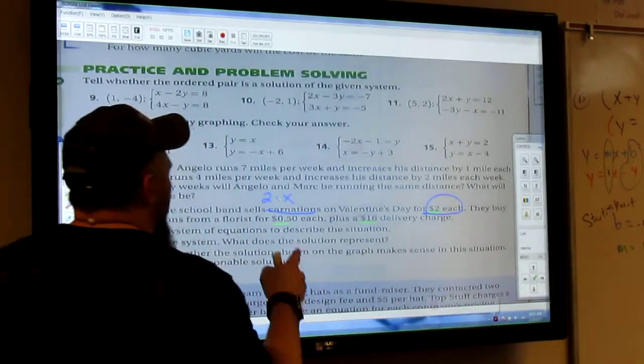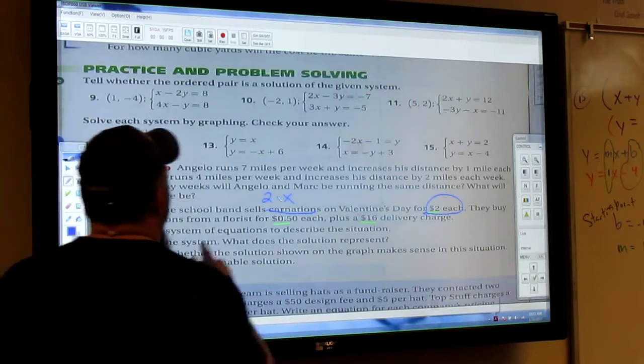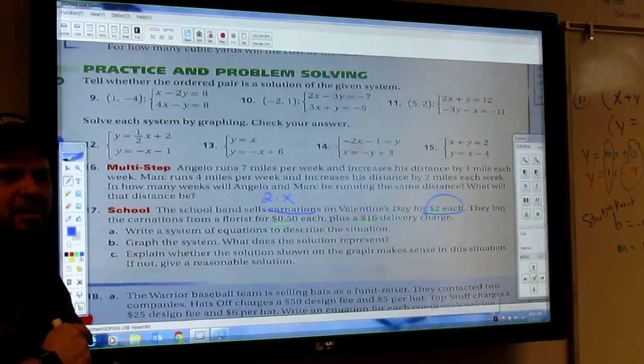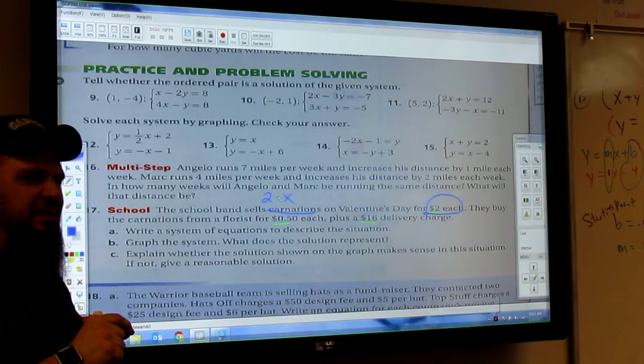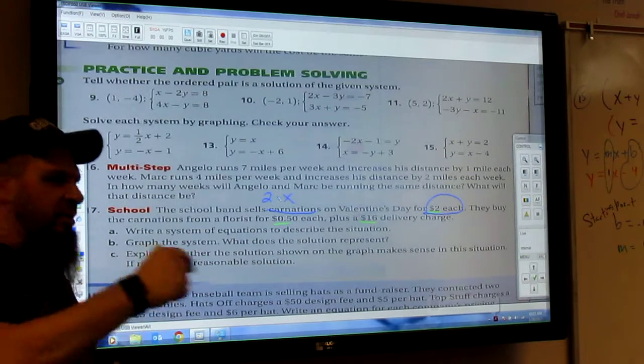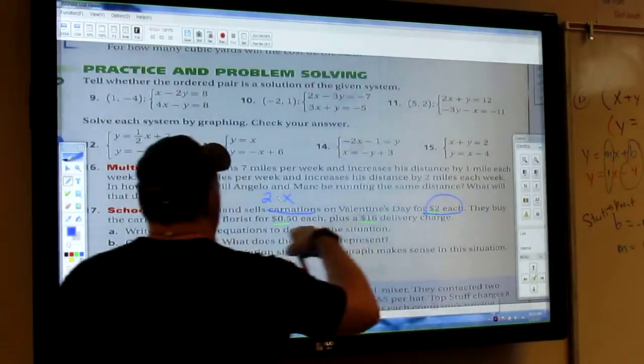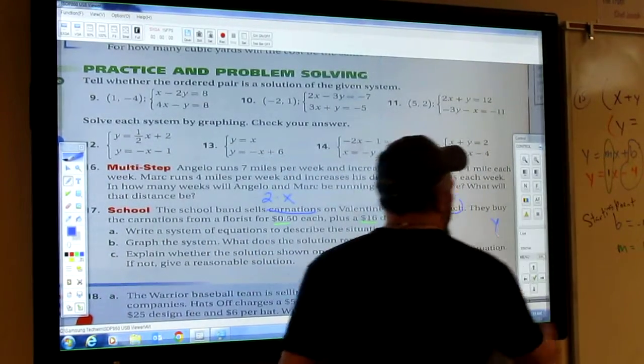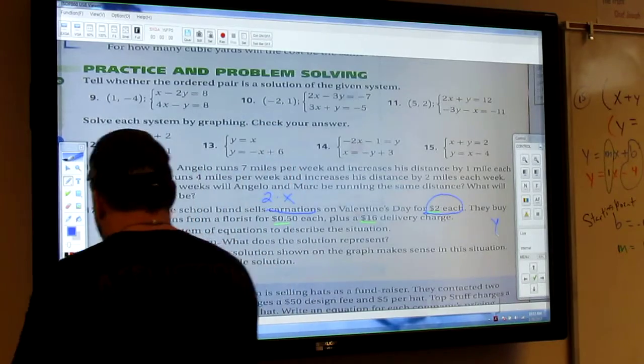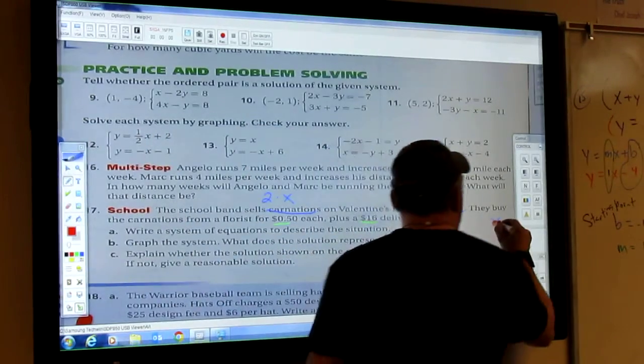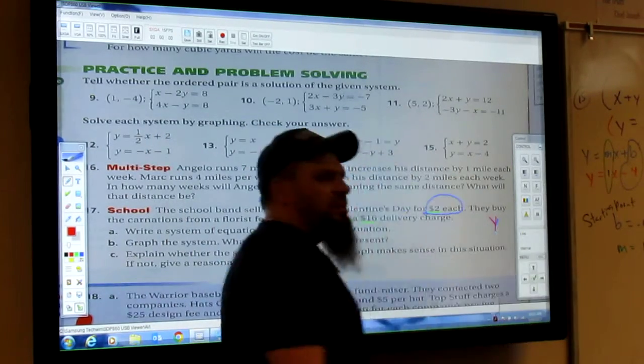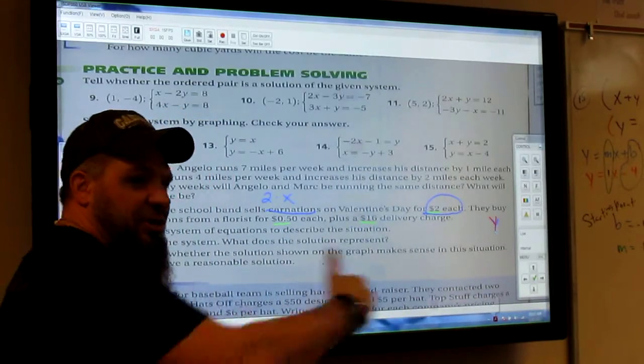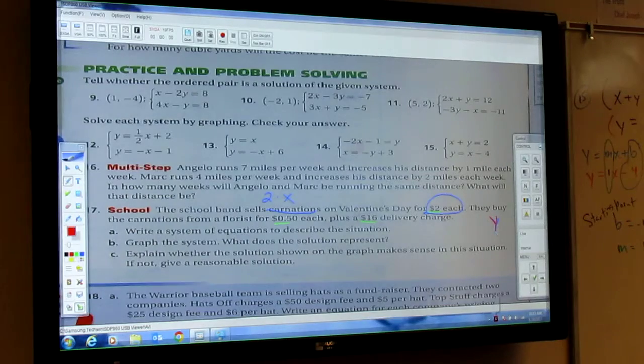So now, they buy the carnations from the florist for $0.50. So it's $0.50 for the carnations. So when they buy them, that's going to be Y. Let's just say that that's Y. In fact, let's change the color. Let's say that that's Y. Because when you sell them, it's a certain amount. When you buy them, it's a negative amount.